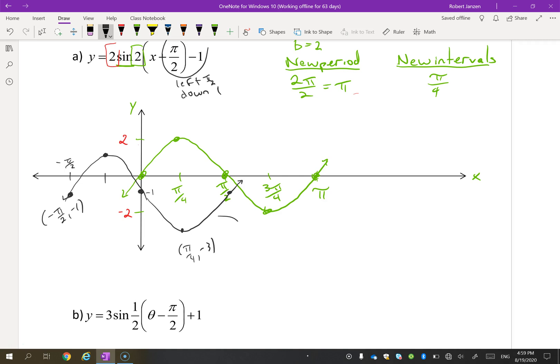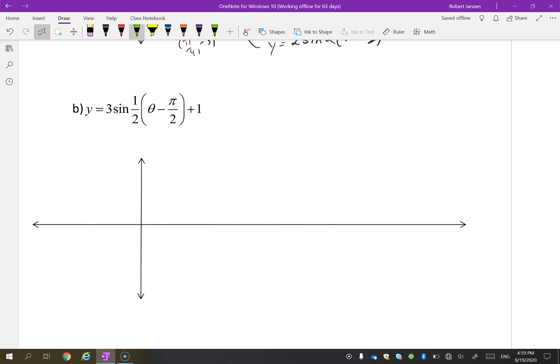There's our graph. Maybe we should label it. This is y = 2sin(2(x - π/2)) - 1. Okay? Let's try another one. Sine graph again. This time this is θ. Sine graph, 5 points. Draw these 5 points every time. Don't try to just assume that you can just draw the shape of the graph. Draw those 5 points. You need to show you can transform those 5 points.